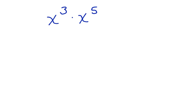Here we have x to the third times x to the fifth. When you multiply values in exponential form, we add the exponents. 3 plus 5 is 8. This becomes evaluated as x to the eighth power.